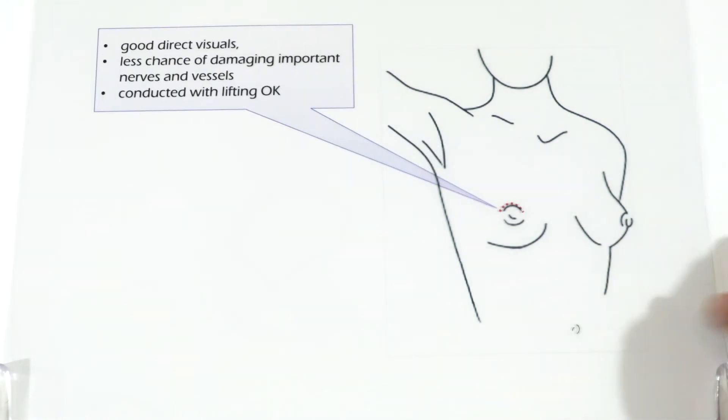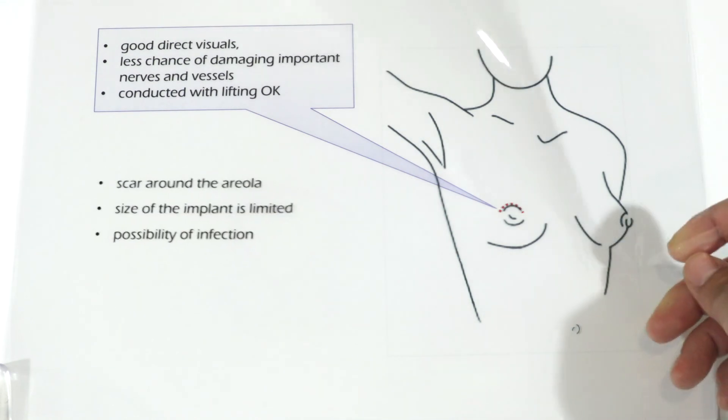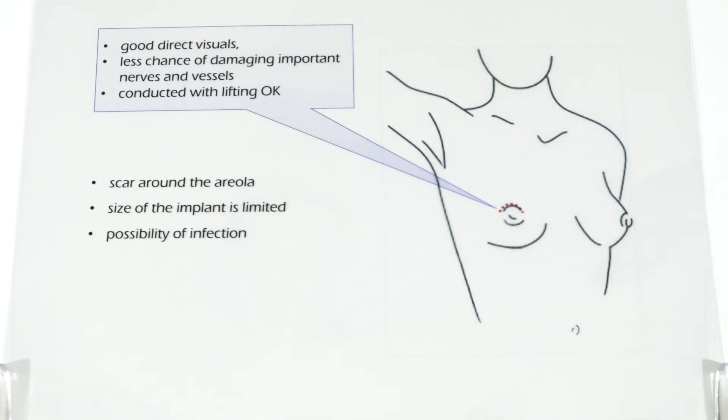Periareola incision provides good direct visuals. Therefore, the augmentation would be more accurately conducted and there is less chance of damaging important nerves and vessels. It can also be simultaneously conducted with lifting. The disadvantage is that it is not satisfying for those who are concerned with scar on the areola. Also, the size of the implant is limited to the size of the areola. And there is also possibility of infection.